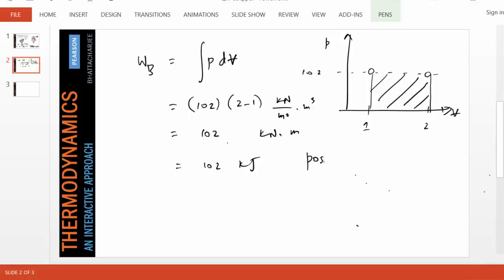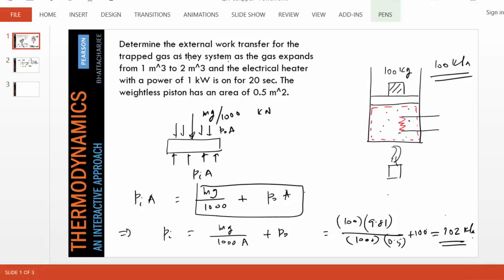Why? Because the system is doing work. Notice the gas is lifting the weight, the gas is lifting the atmosphere, so the work is coming out of the system, therefore the boundary work is positive.